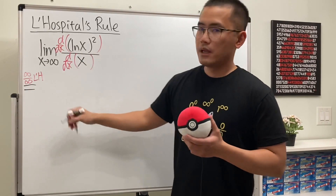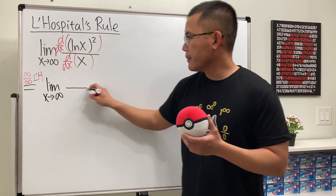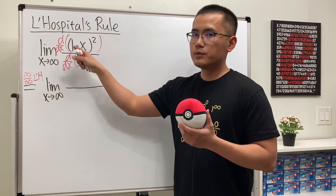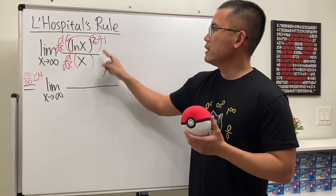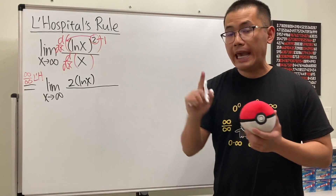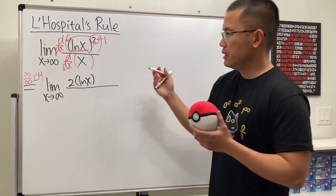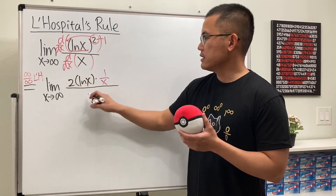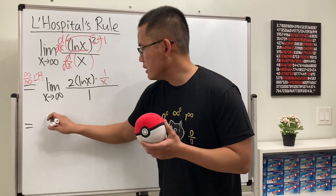So we take the derivative of the top and the derivative of the bottom. For the derivative of the top function, we use the power rule: bring the power to the front and subtract one, giving us 2 times ln x to the first power, then multiply by the derivative of the inside using the chain rule. The derivative of ln x is 1 over x, and the derivative of x is just 1.